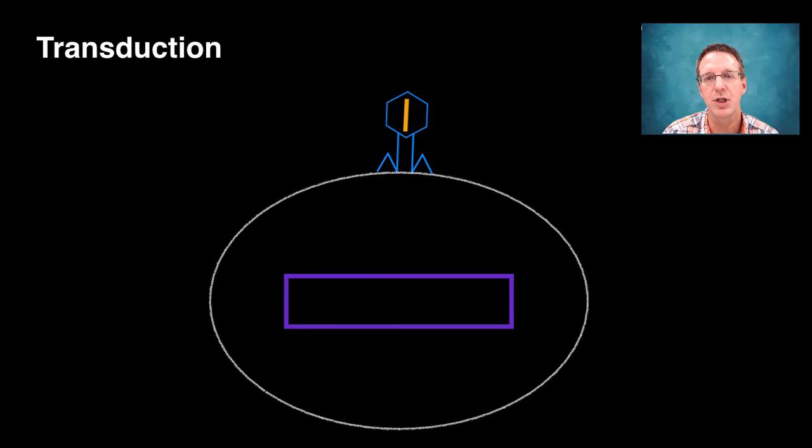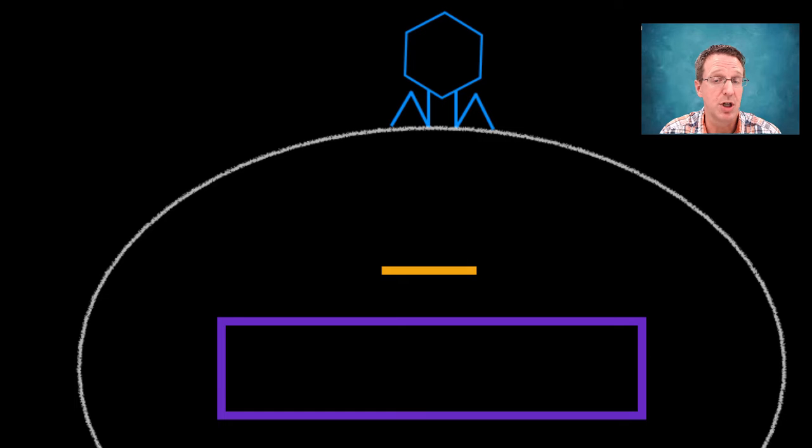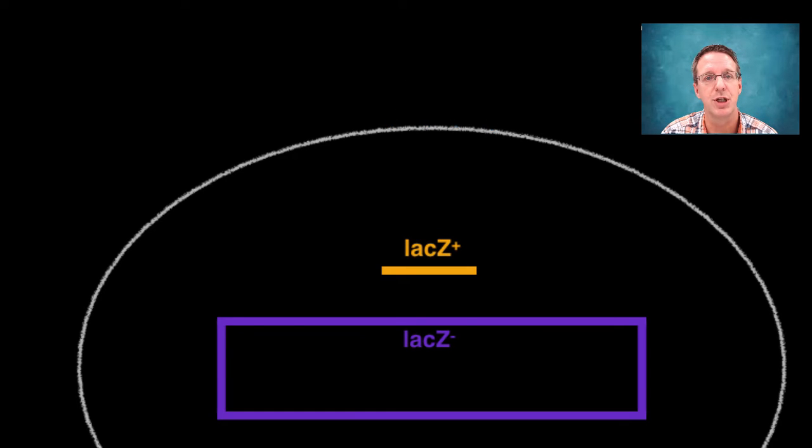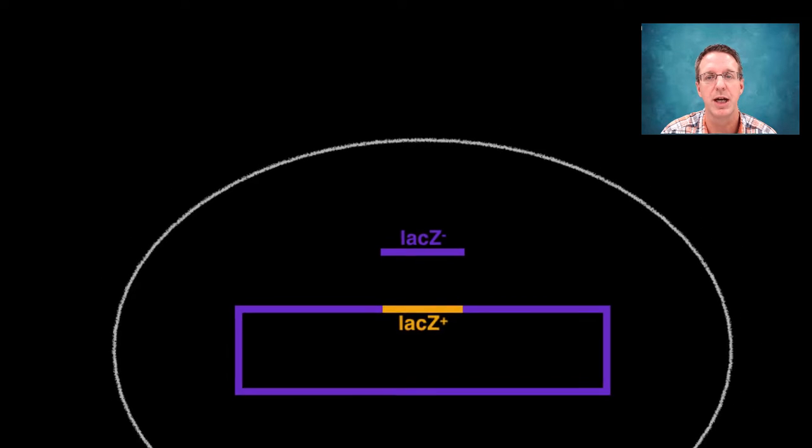it no longer carries the instructions to make a new viral particle. And instead, the incoming DNA, as you can guess, can be inserted into the bacterial genome as described before, and thus generating genetic variation.